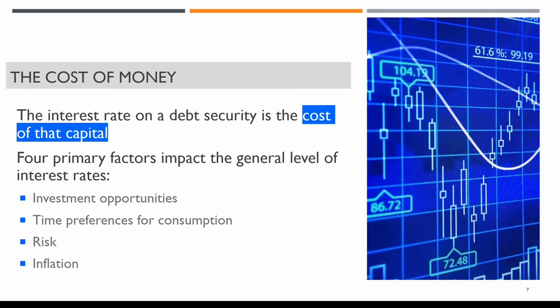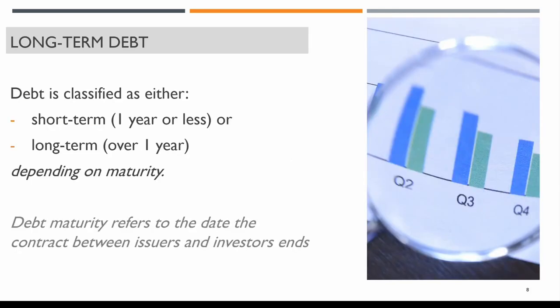The interest rate on a debt security is the cost of that capital. There are four primary factors that impact the general level of interest rates: investment opportunities, time preferences for consumption, risk, and inflation. Debt is generally classified as either short-term — one year or shorter — or long-term, which is over one year, and these depend on maturity.